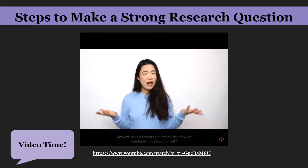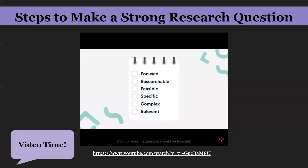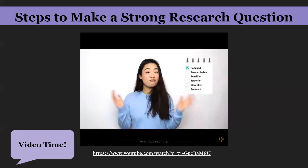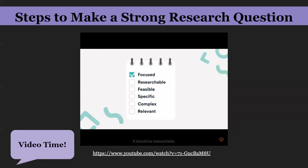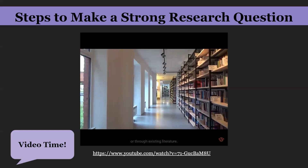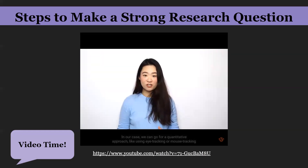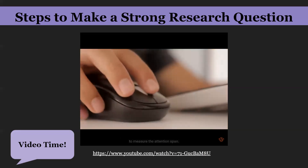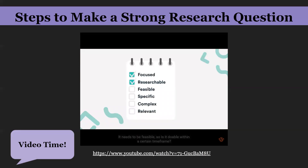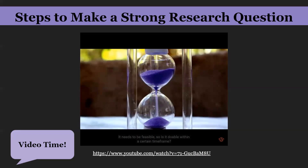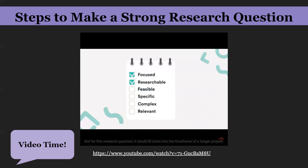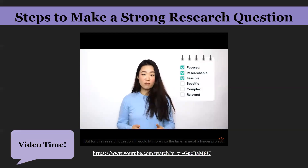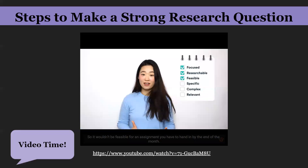Now we have a research question — but how do you know if it's good? Here's a checklist. A good research question should be focused, meaning it focuses on a single problem — like Twitter's effect on attention span of high school students. It should be researchable, meaning the answer can be found by collecting empirical data or through existing literature; for example, using eye tracking or mouse tracking to measure attention span. It also needs to be feasible — doable within a certain time frame with access to the needed data or respondents.